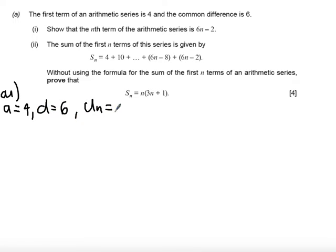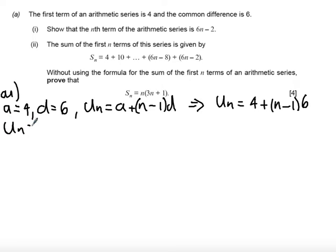We can use from the formula booklet un equals a plus n minus 1 times d. Substituting our values in we get un equals 4 plus n minus 1 times 6. So I'm going to expand the bracket so I get 4 plus 6 times n is 6n, 6 times minus 1 is minus 6 and then just collect terms to show that we do indeed get 6n minus 2 as required.